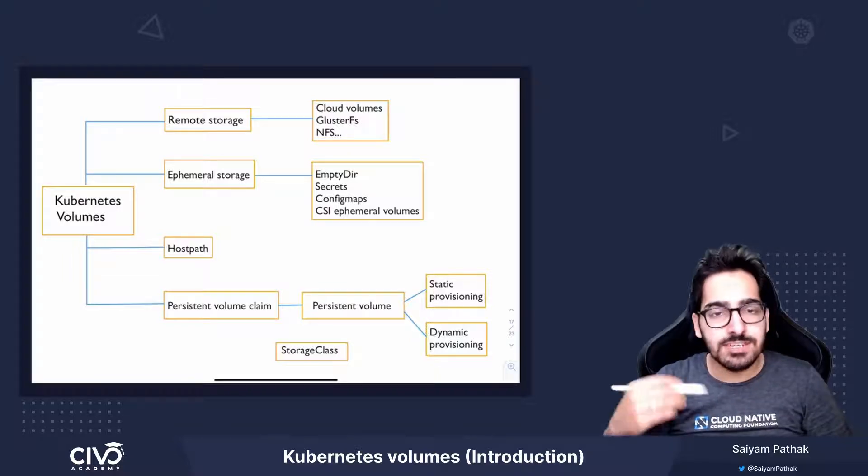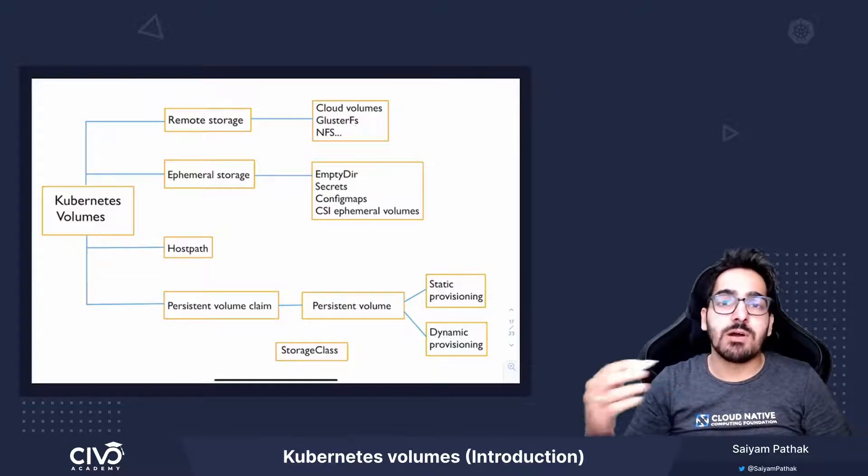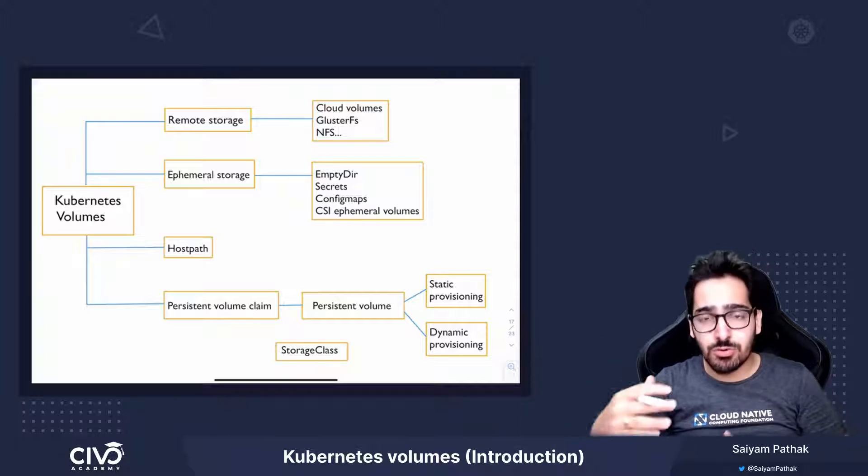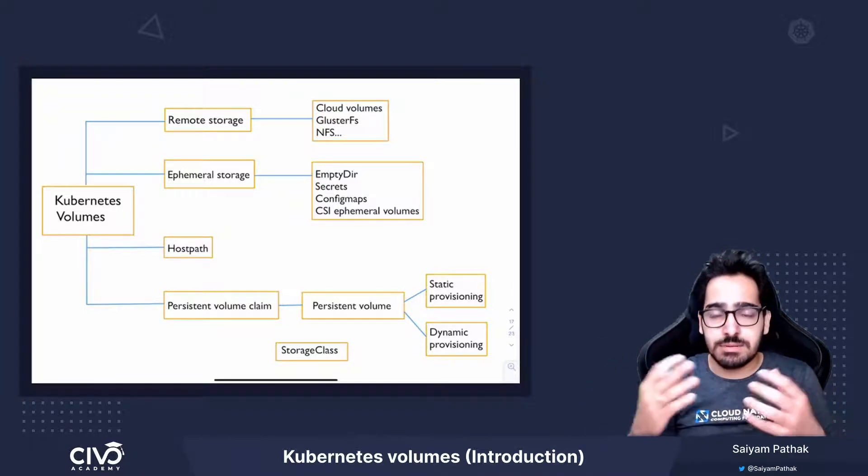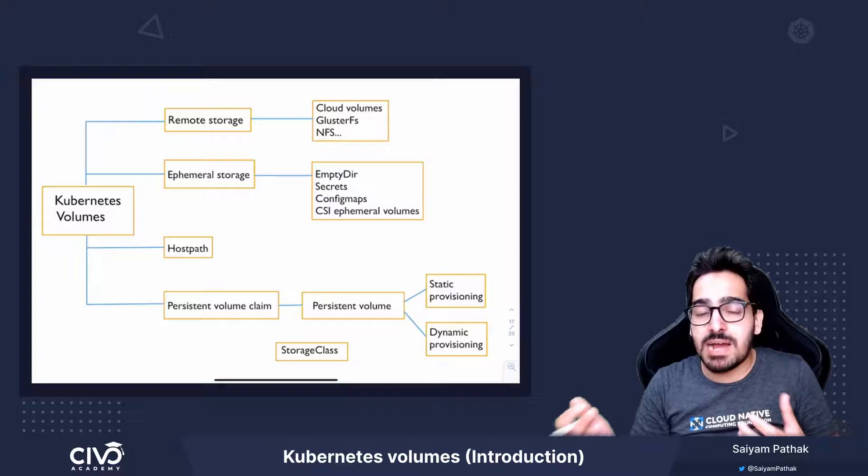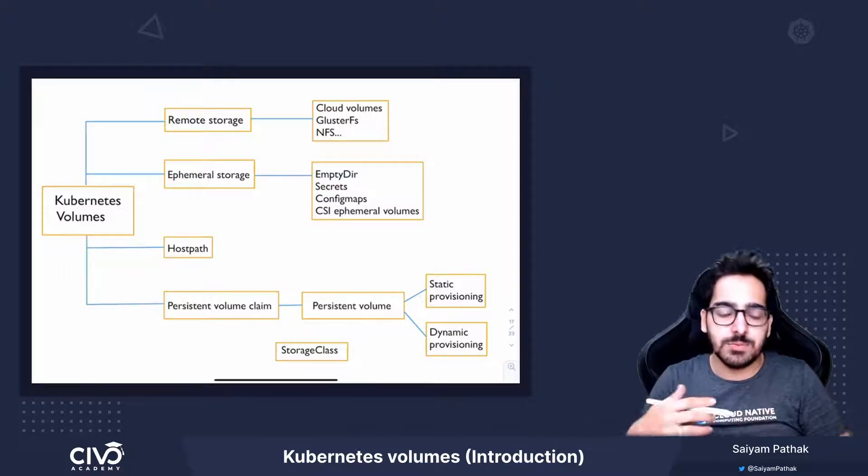Kubernetes provides various volume plugins that can be mounted inside the container to store data temporarily, in a persistent manner, or locally as well.